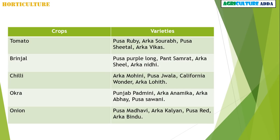These are the different crops and their major varieties — please read them. In tomato: Pusa Ruby, Arca Saura, Pusa Sheetal, Arca Vikas. Also covered are varieties for brinjal, chili, okra, and onion.